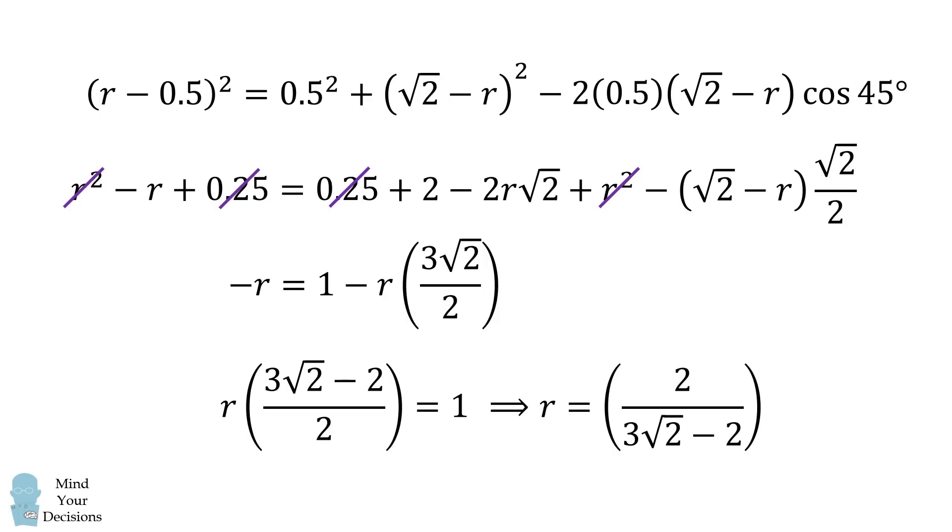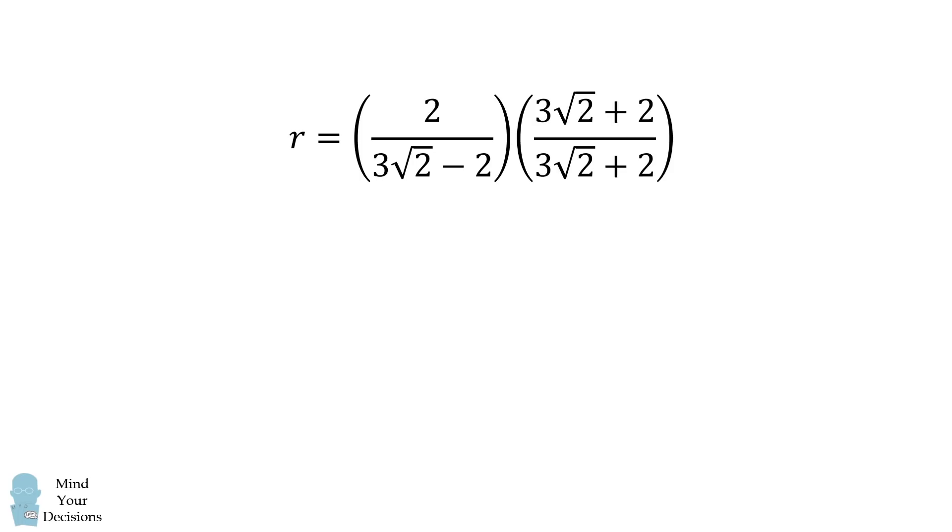To make things a little bit cleaner, we can rationalize this fraction. We'll multiply the numerator and the denominator by the conjugate of the denominator. Once we simplify, we get that r is equal to 3 times the square root of 2, plus 2, all over 7. And that's approximately equal to 0.892. And that's our answer.